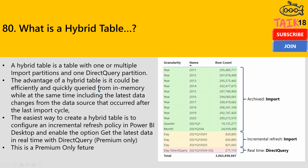The advantage of the hybrid table is that it can be effectively and quickly queried from in-memory while at the same time including the latest data changes from the data source that occurred after the last import cycle. The easiest way to create a hybrid table is to configure an incremental refresh policy in Power BI Desktop and enable the option 'Get the latest data in real time with Direct Query' — this is a premium-only feature.